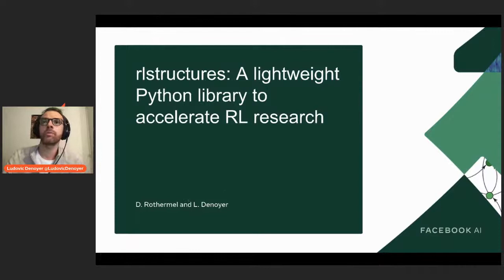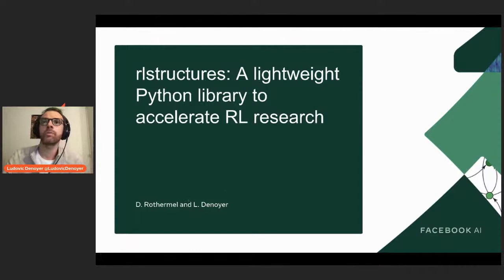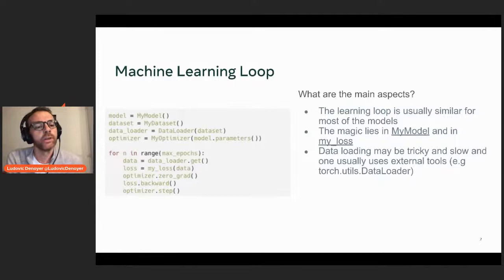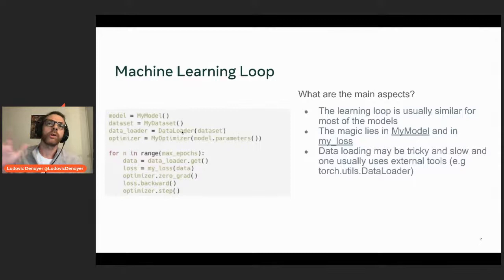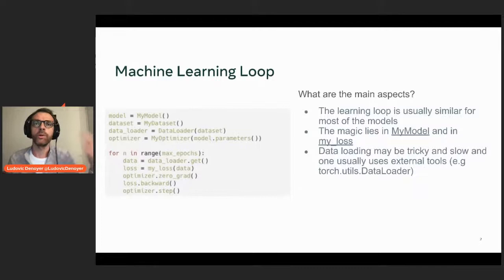My background is in both deep learning and deep reinforcement learning. When you do just deep learning without sequences of actions — using PyTorch for instance — it's quite easy to implement new models and new ideas. The way you do it is by implementing a training loop: you define a model, a neural network, define your training data, use a DataLoader for multi-process loading, and define an optimizer like stochastic gradient descent.